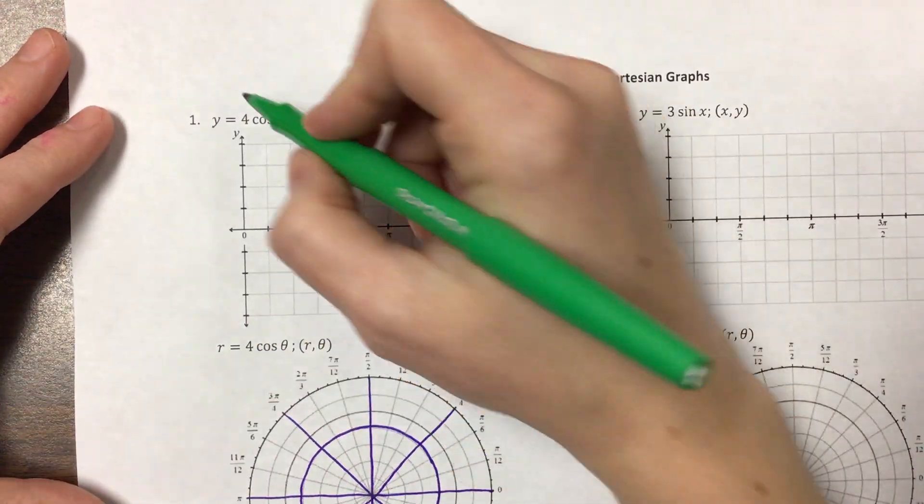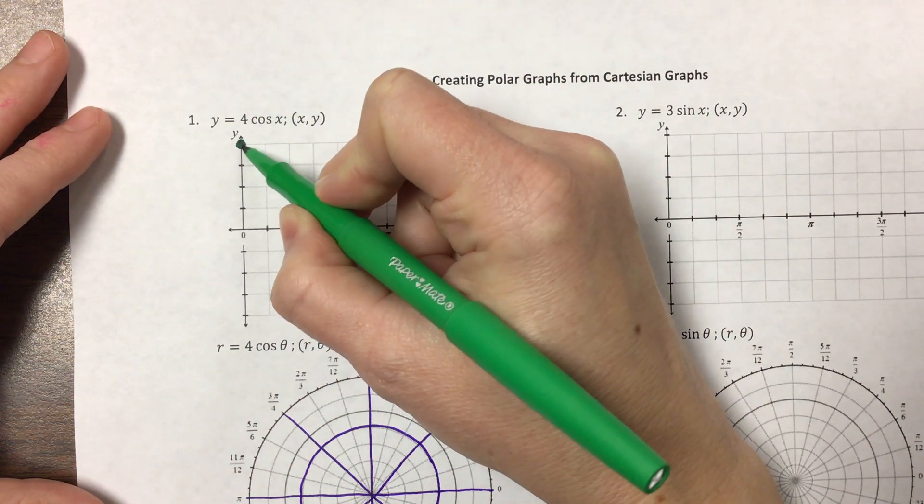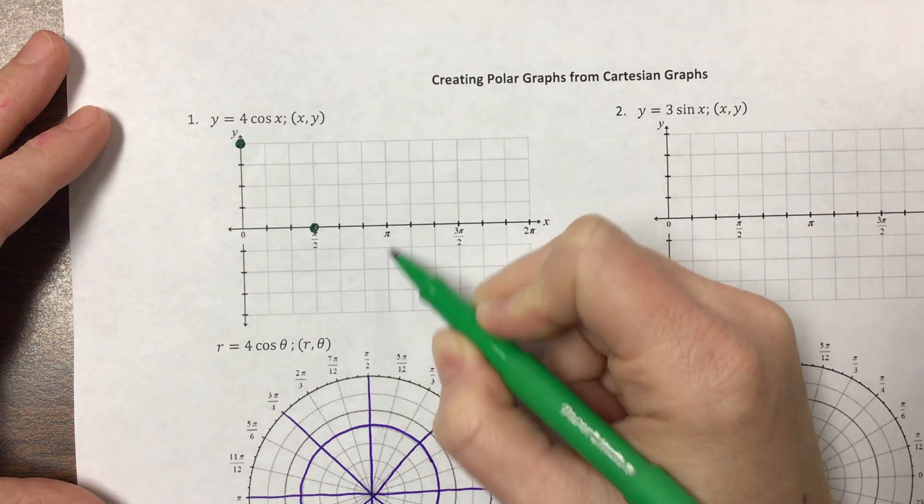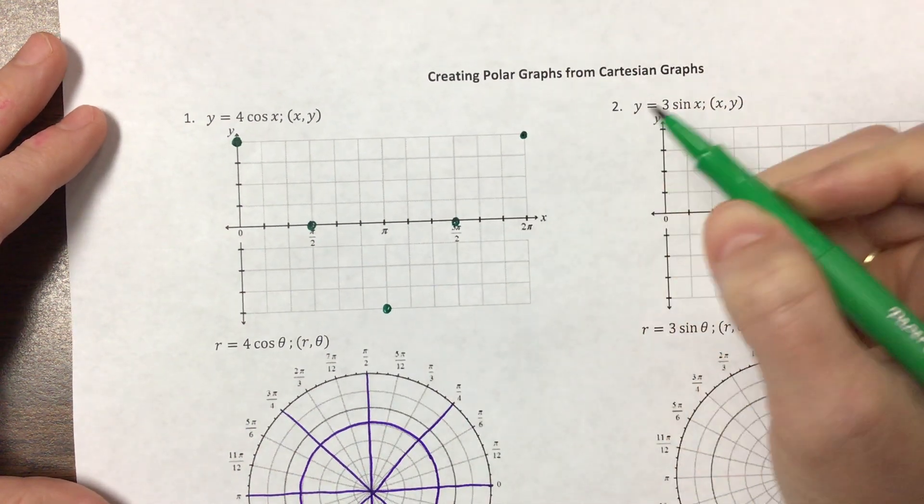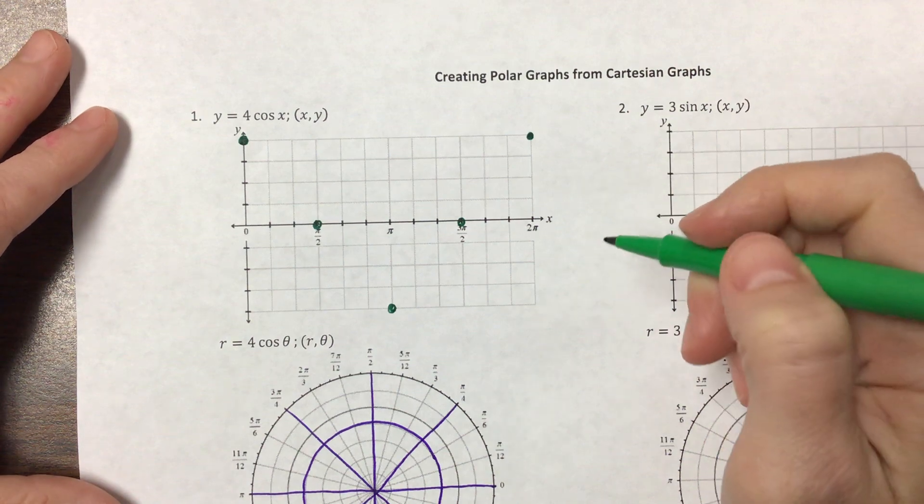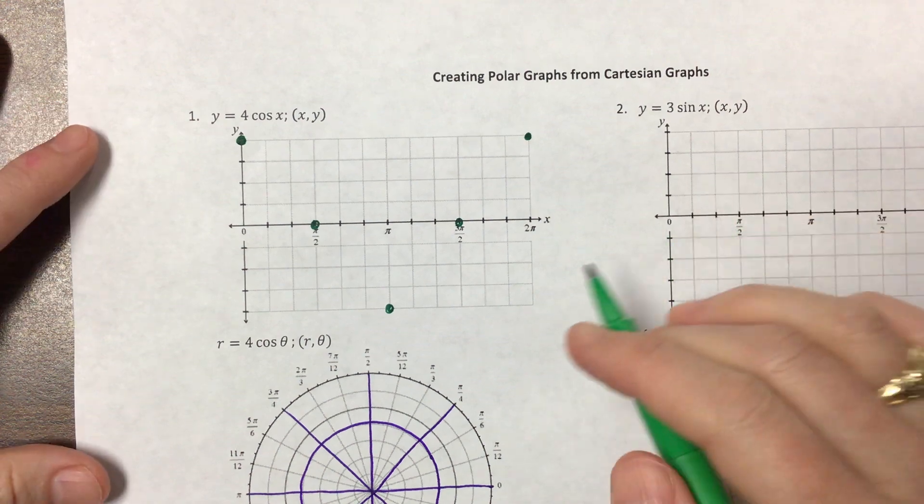The 4 gives us our amplitude. So we start up here, 1, 2, 3, 4. This is cosine, we're here at 0, down at -4, back to 0, and back up to positive 4. I'm expecting that you remember from earlier this year how to graph a trig function. If not, pause and go back and figure it out.